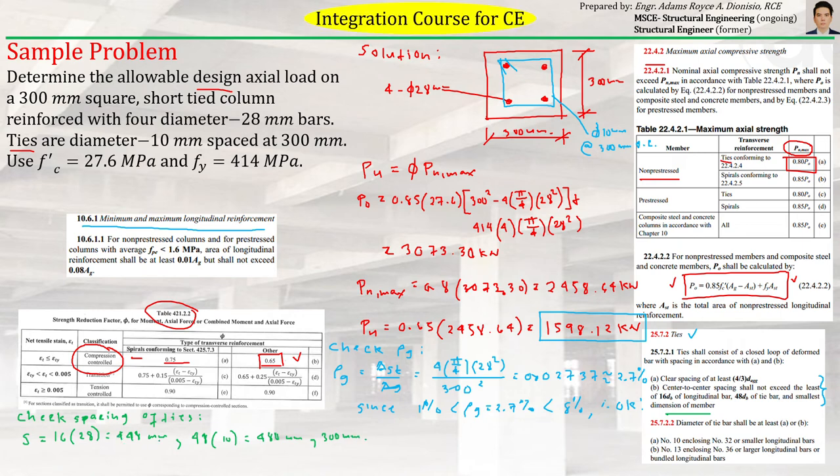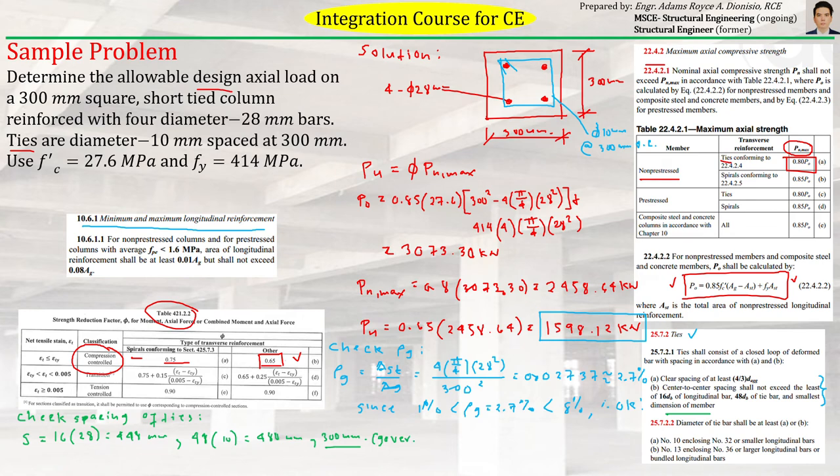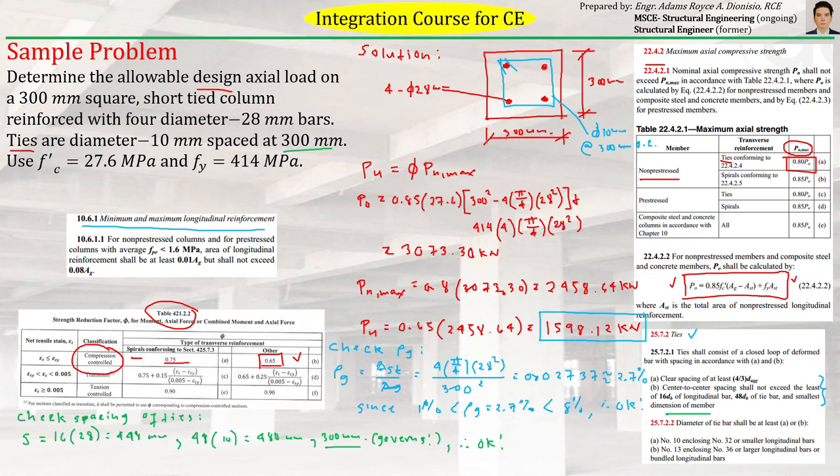So basically, the spacing of ties that will govern will be this, because it's the smallest. So this will be the spacing that will cover. And since the given spacing of ties is 300 mm, therefore, the spacing of our ties in the given problem is okay.